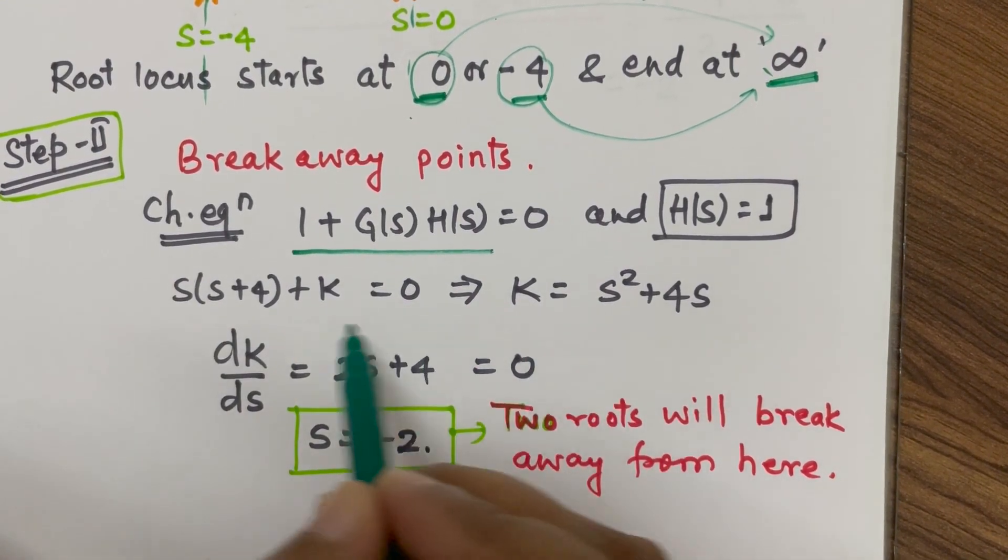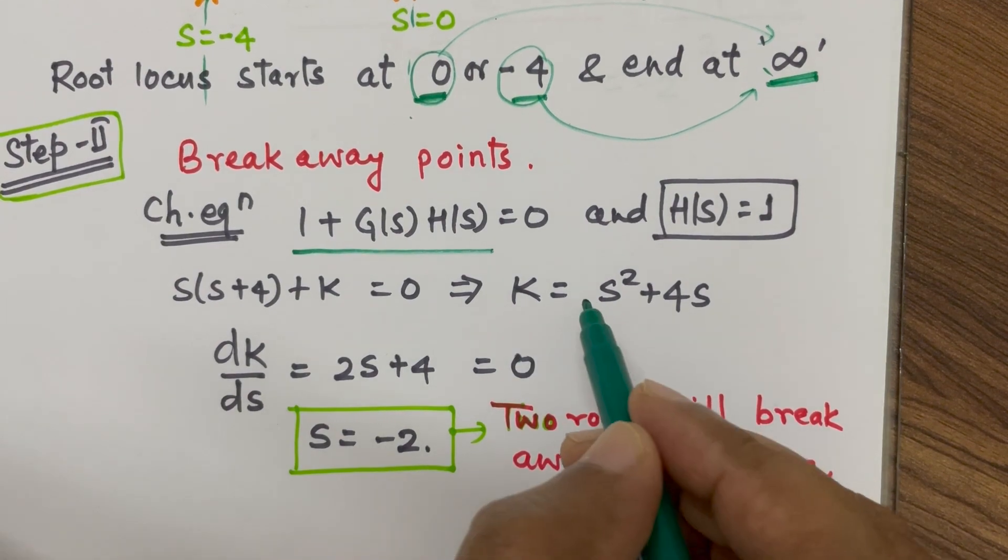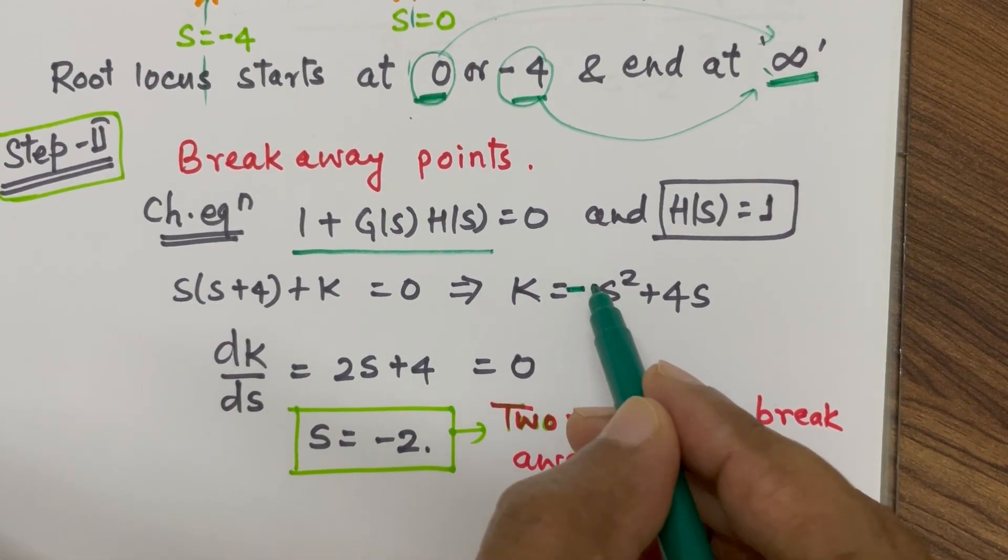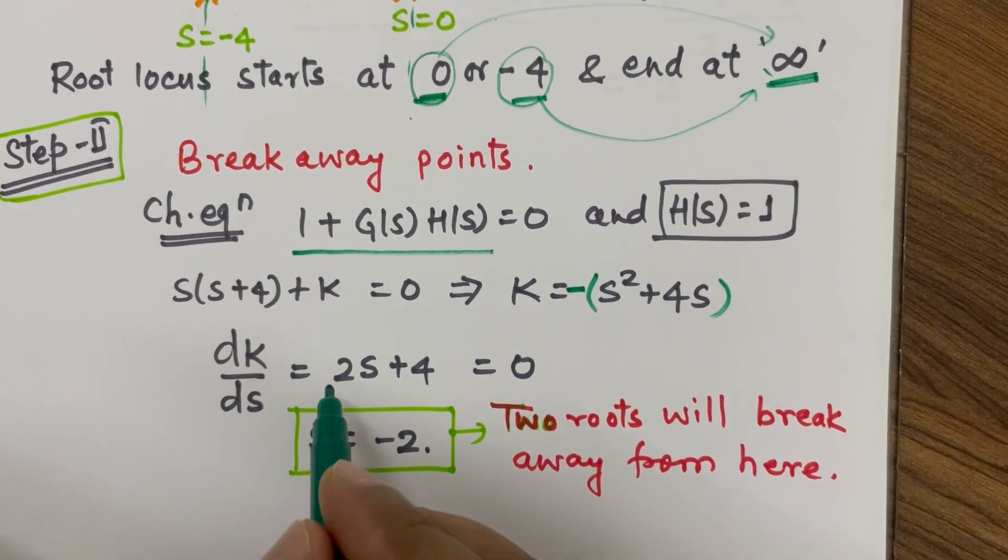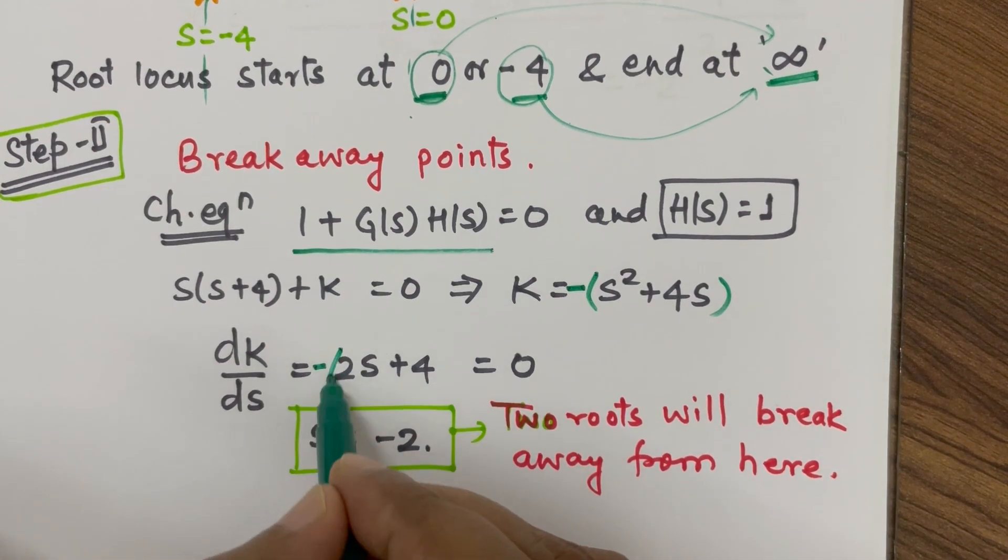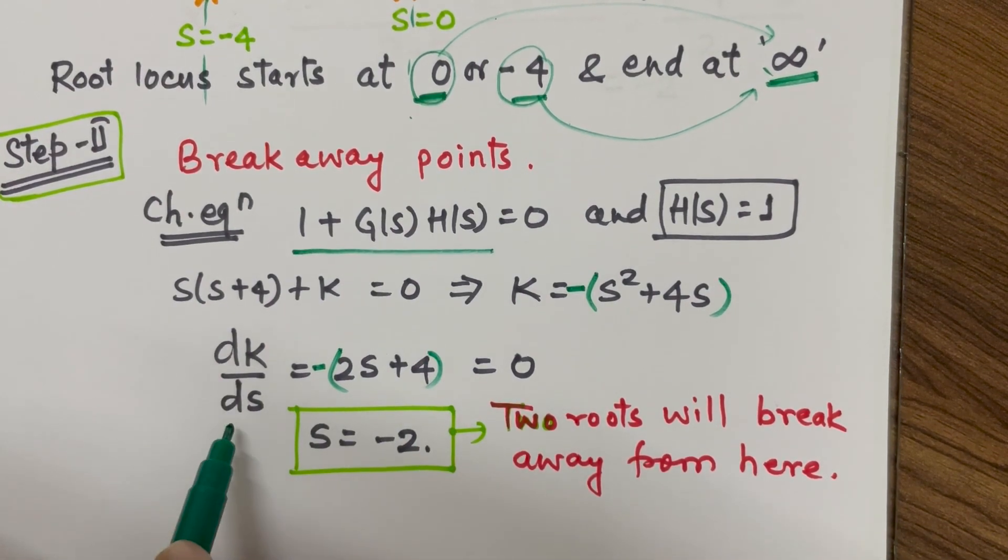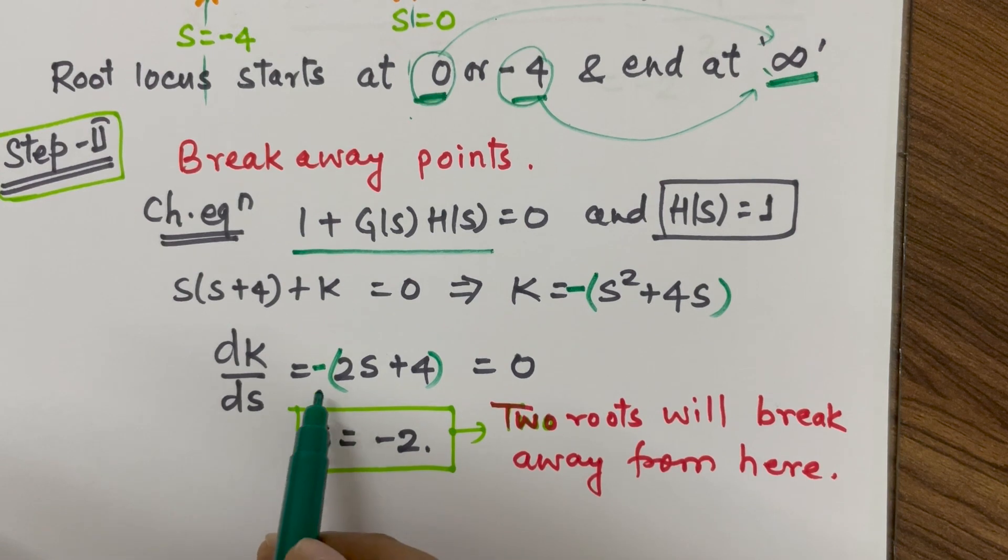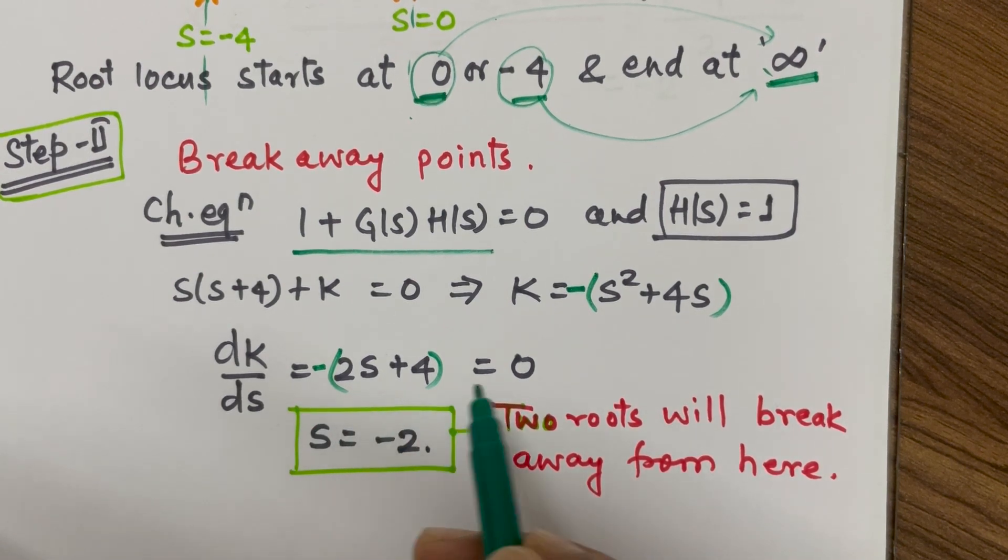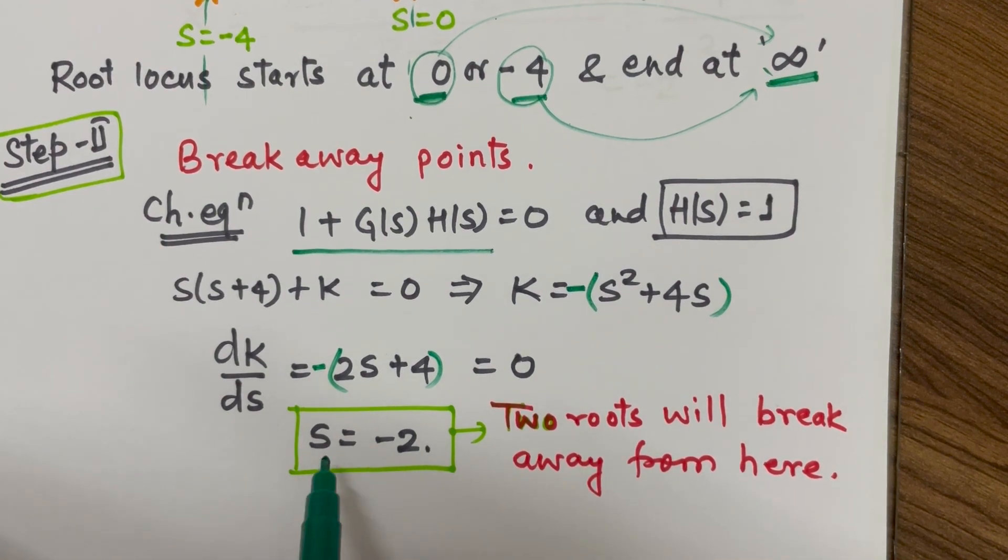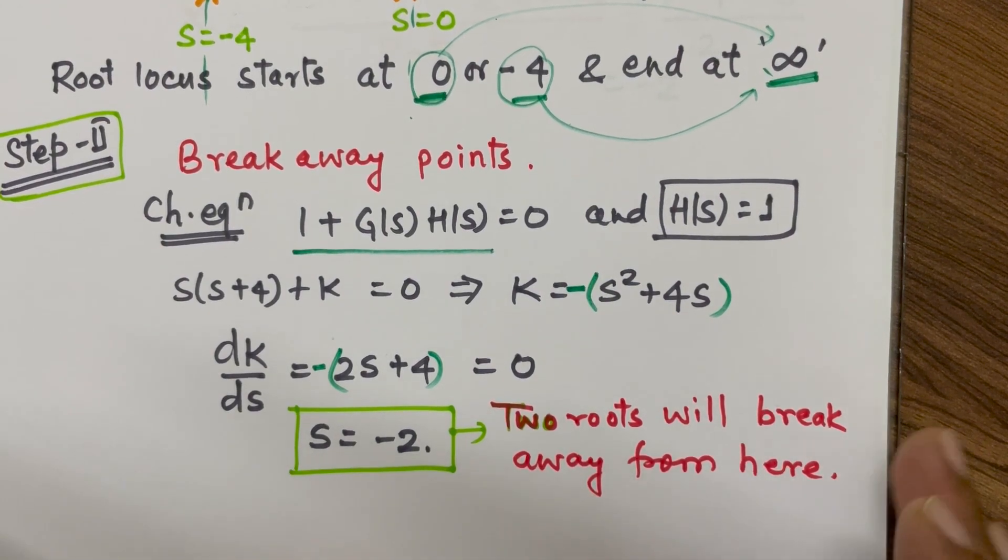Then, we can write what is K and K will be equal to minus of s square plus 4s. So, this means dK by ds minus of 2s plus 4 equal to 0. So, s equal to minus 2. So, this point is called breakaway points.